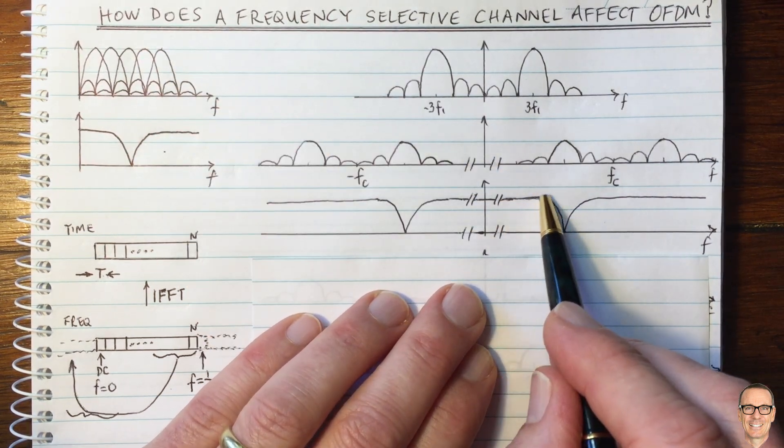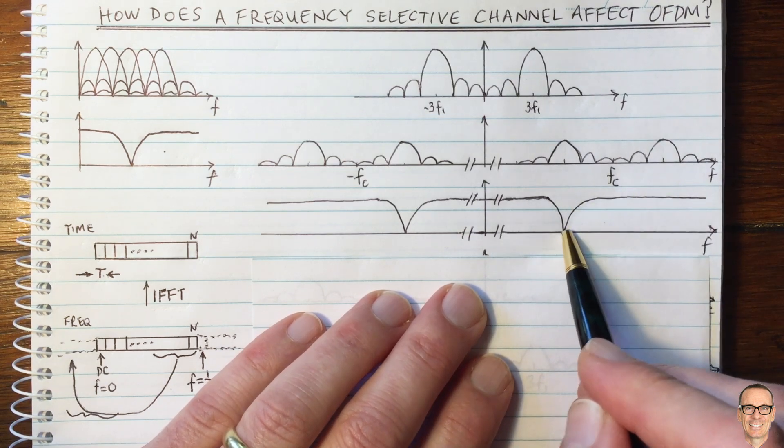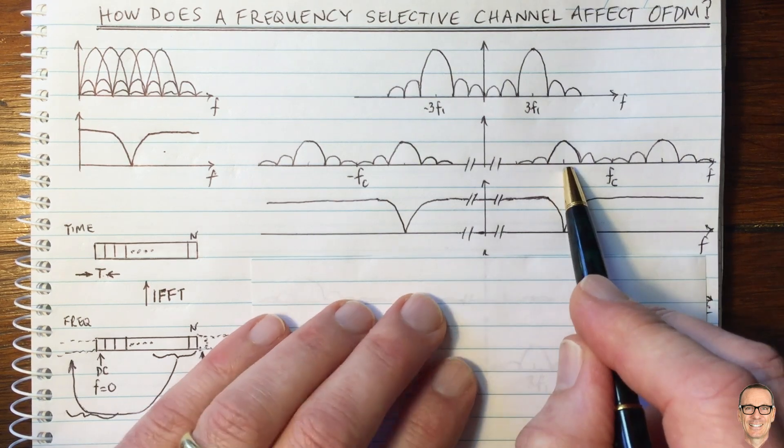So now I'm drawing the frequency selective channel. I'm showing it with a notch here. I'm showing it to correspond with a frequency slightly less than the carrier frequency.